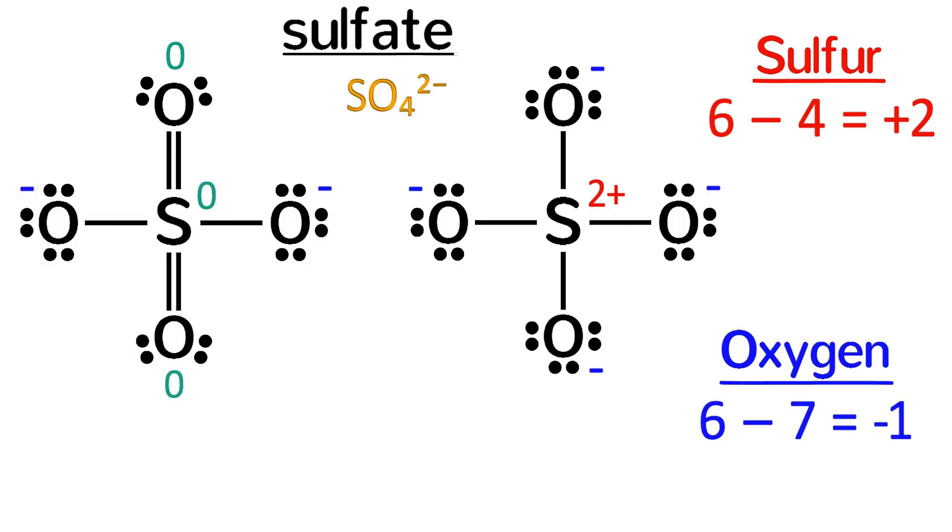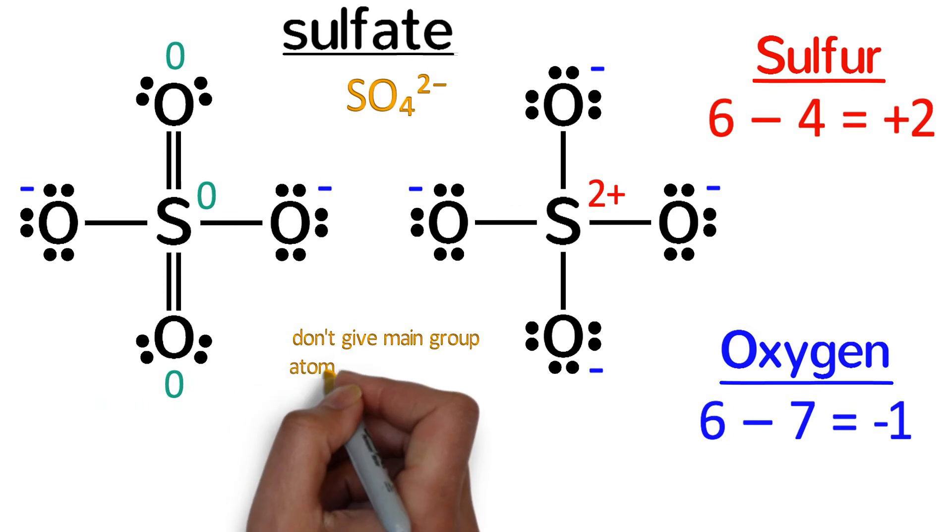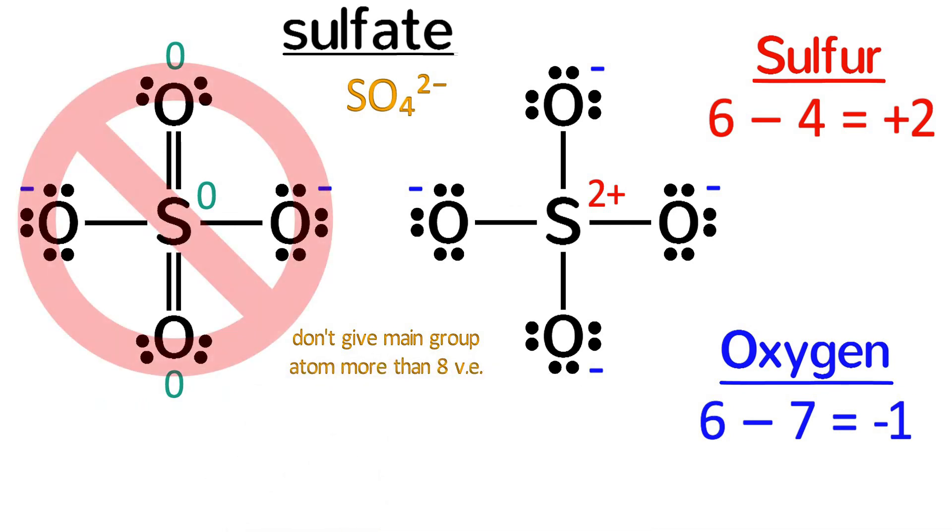At first glance, it may seem preferable to minimize the formal charges, which is often the case. However, it is more important not to give a main group atom more than eight valence electrons,